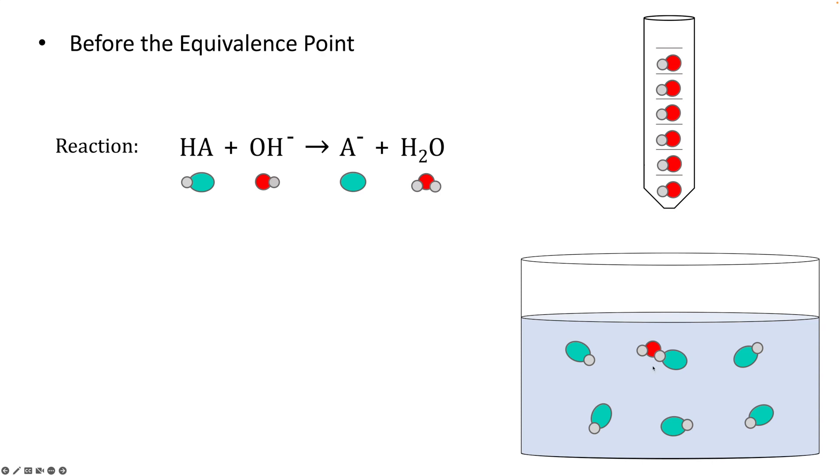The water will then go into the background. And essentially, you're taking an HA molecule and the strong base is converting it into the conjugate base of that HA molecule.